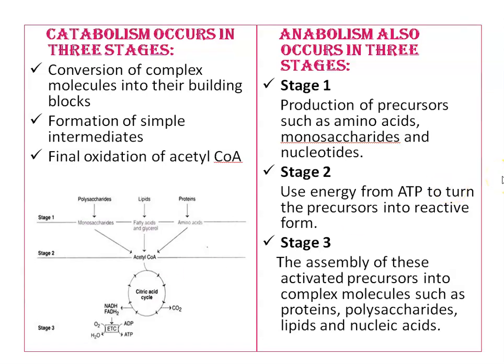Anabolism also occurs in three stages. Stage 1 is the production of precursors such as amino acids, monosaccharides, and nucleotides. Stage 2 involves the use of energy from ATP to turn the precursors into reactive form. And in stage 3, the assembly of these activated precursors into complex molecules such as proteins, polysaccharides, lipids, and nucleotides.